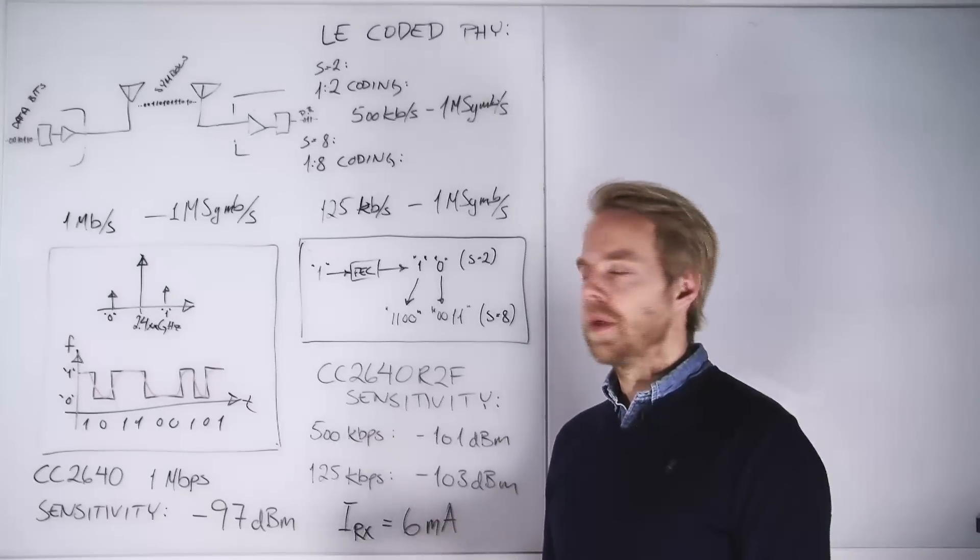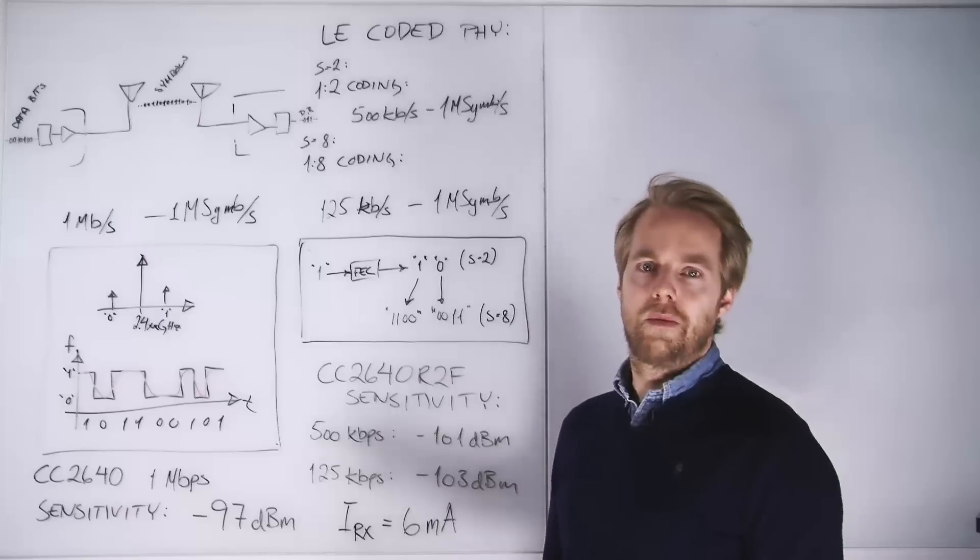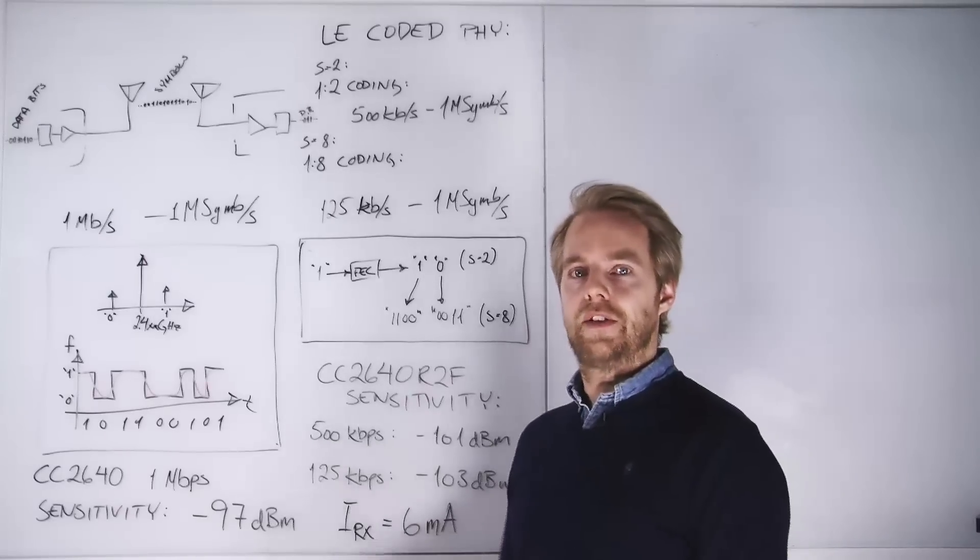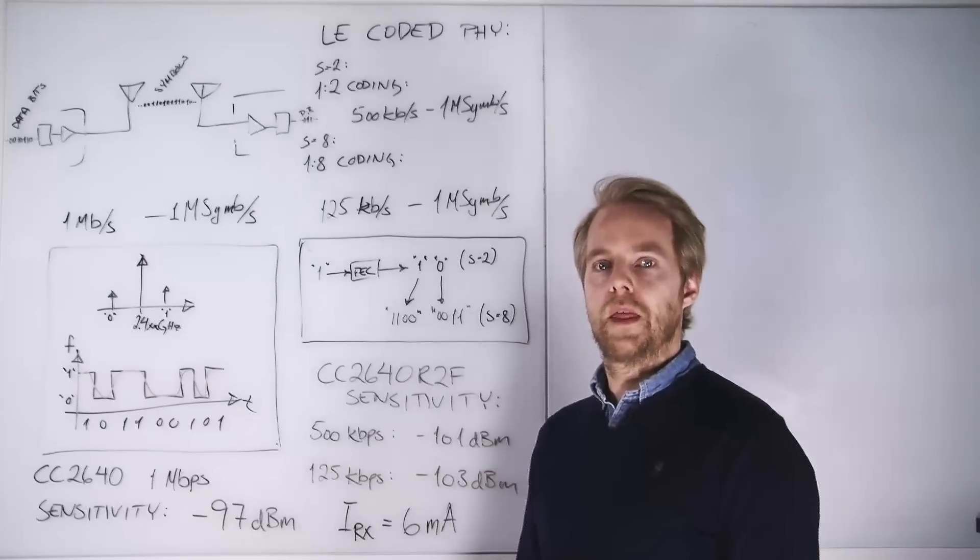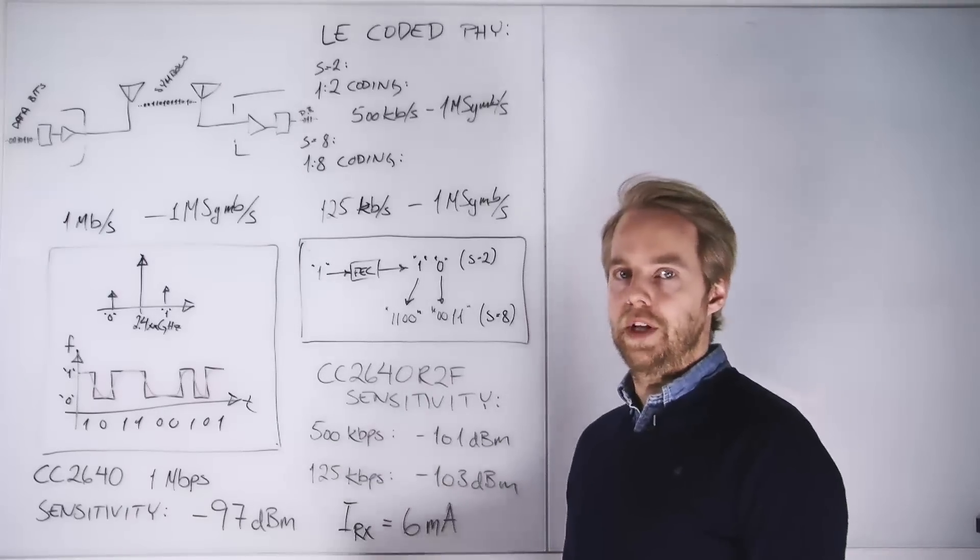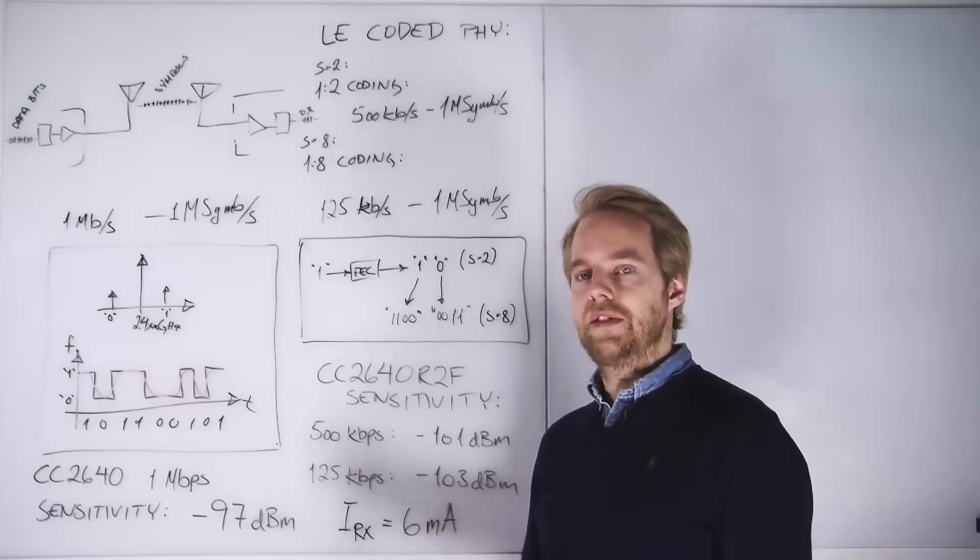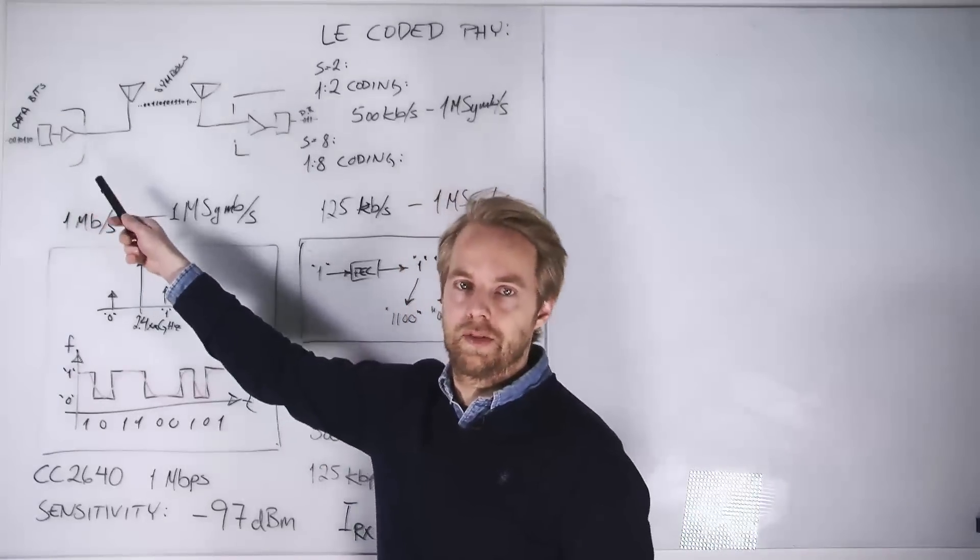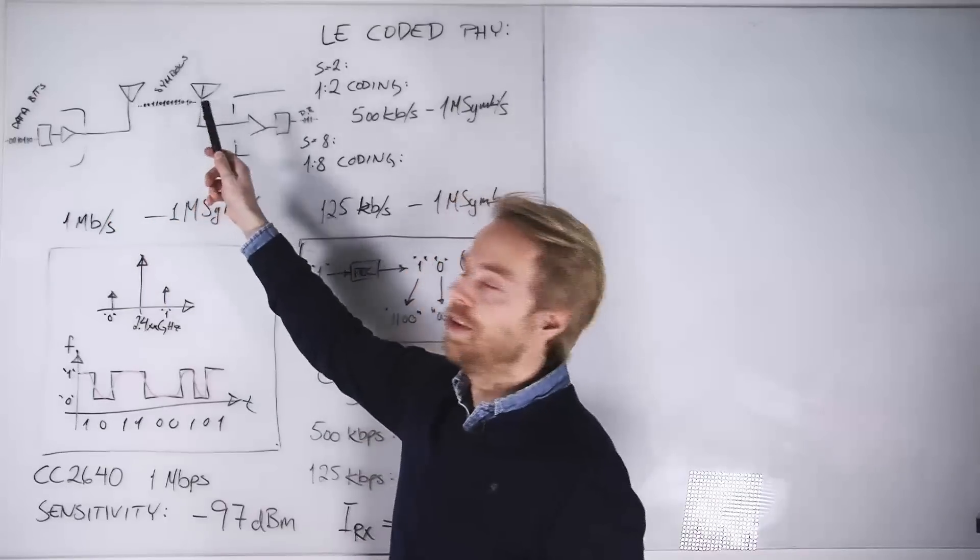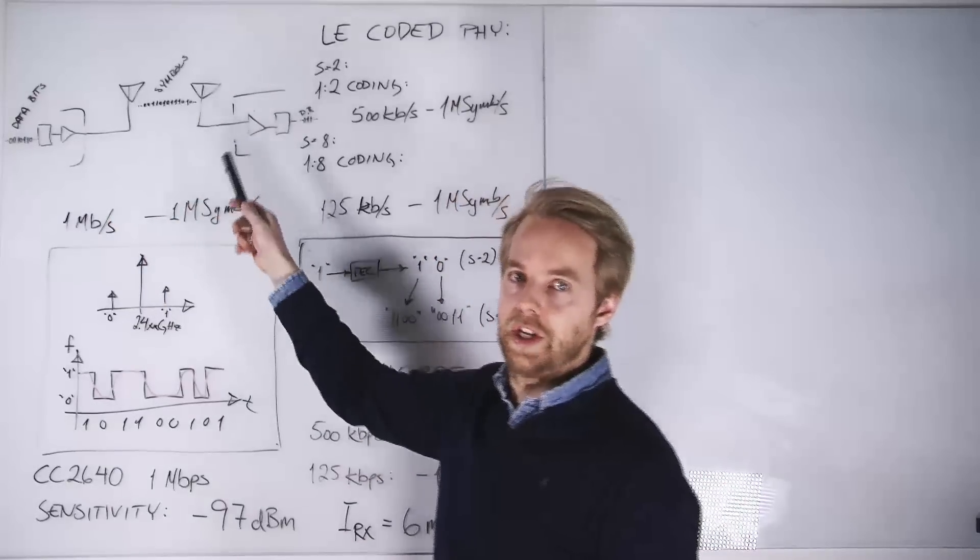So what is coding? Consider regular Bluetooth Low Energy. The data rate is one megabit per second, and the over-the-air symbol rate is one mega symbol per second. So that means that for each data bit that you put into the transmitter, you get one physically modulated symbol over the air.